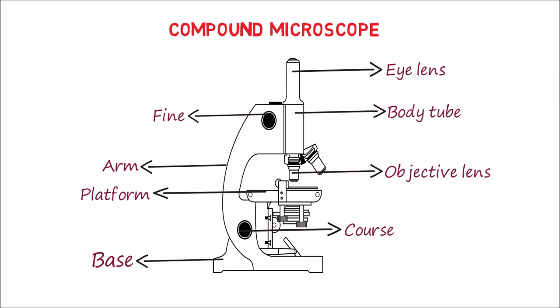Below the objective lens is a platform, also called a stage, with two clips to hold the glass slide. A small aperture just below the stage allows light from the light source to reach the objective lens. Just above the light source is an iris, also called a diaphragm, which controls the amount of light passing through the aperture.